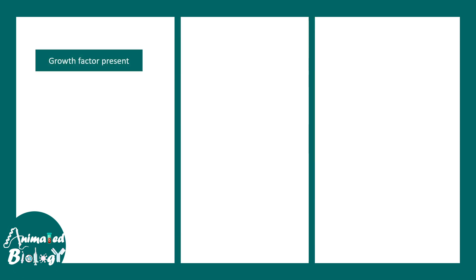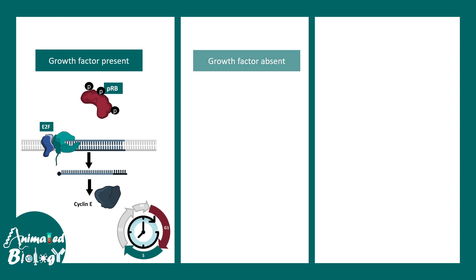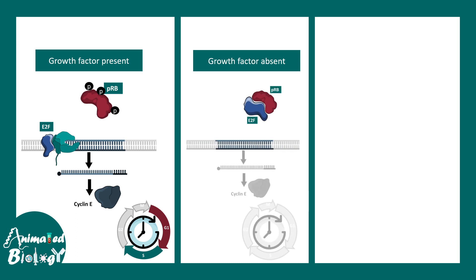Consider three situations. First, when growth factor is present, the cell receives the necessary nutrients to divide, PRB is hyperphosphorylated, E2F can bind to the DNA, cyclin E is produced, and the cell cycle moves from G1 to S. Second, when growth factor is absent, E2F is inhibited by PRB, PRB is not phosphorylated, cell cycle progression is halted, and cyclin E is not produced.